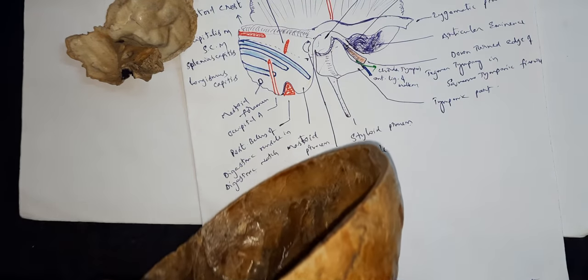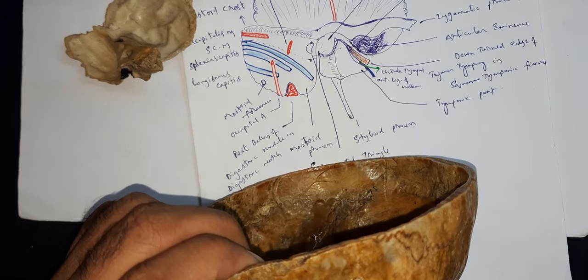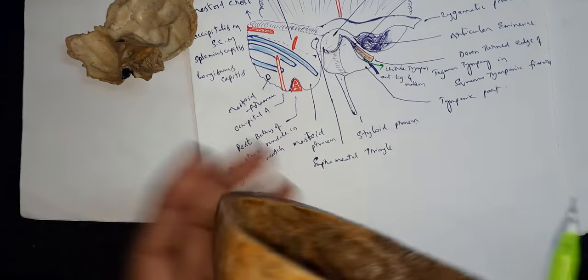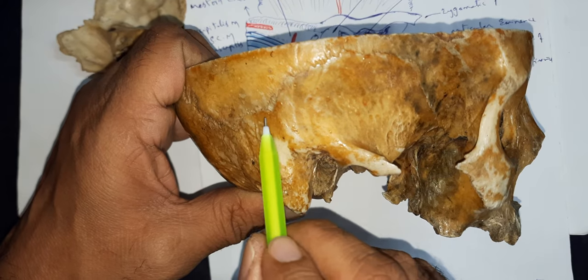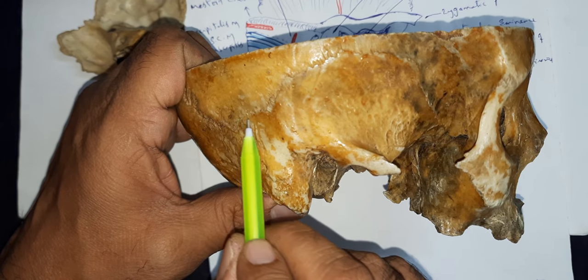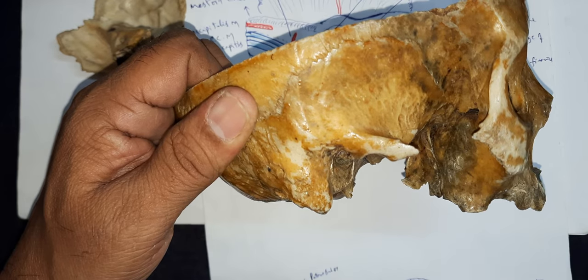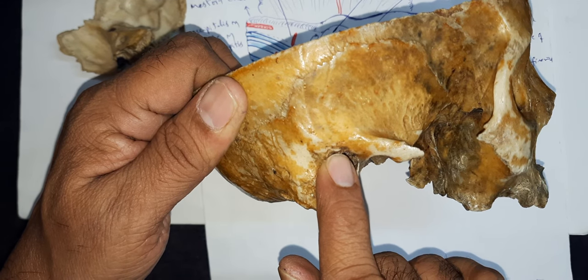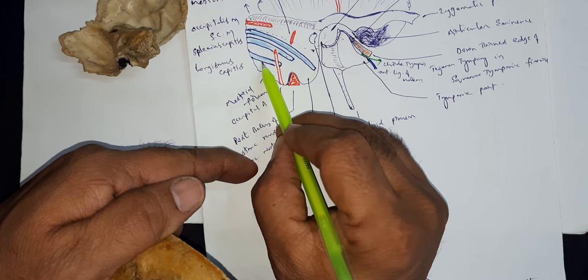On the external surface, this entire surface gives attachment to the temporalis muscle. Behind that, this is the part where the occipitalis muscle originates. Coming to the mastoid process, entire surface is attached by the sternocleidomastoid muscle. Below that, we have the attachment of the splenius capitis muscle, and below that is the longissimus capitis muscle. Through this groove, the occipital artery ascends up.